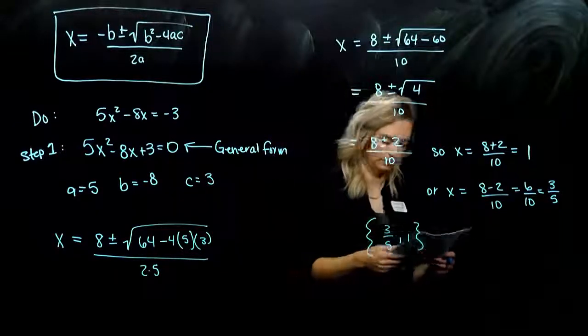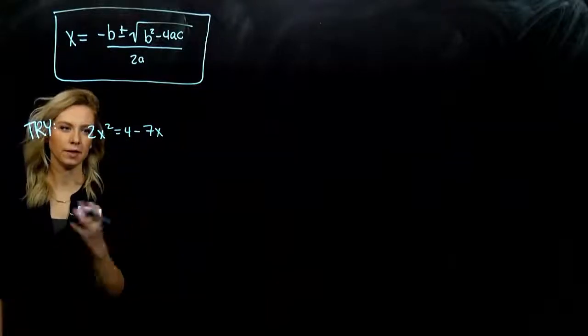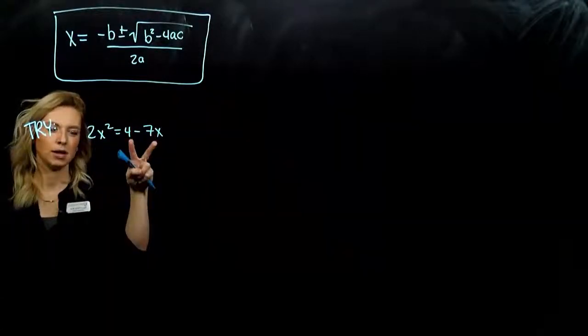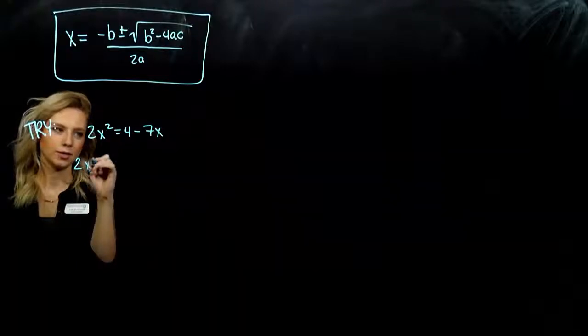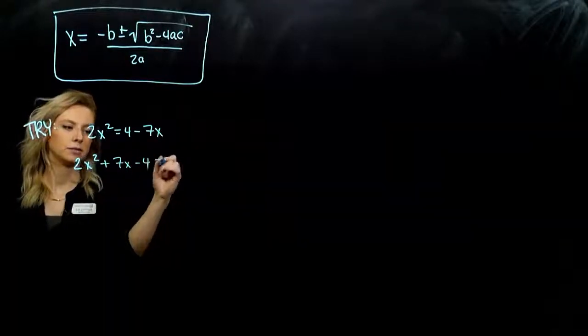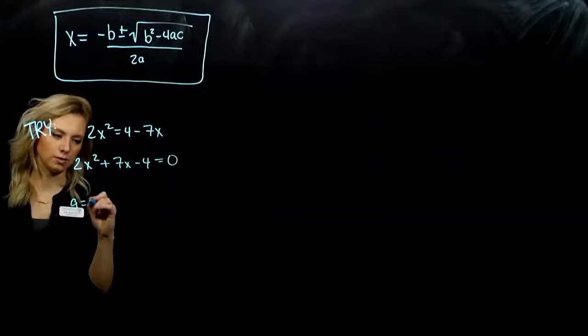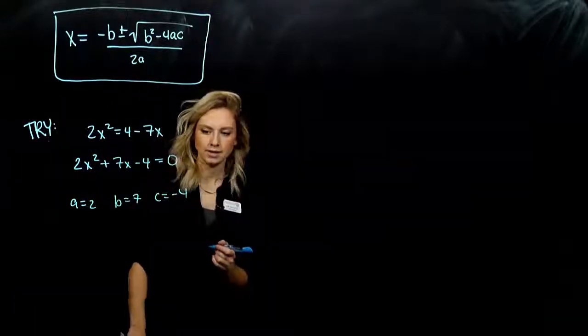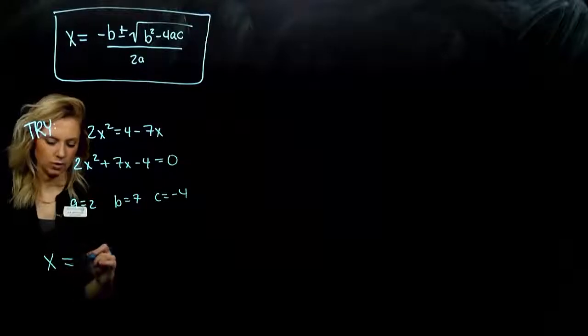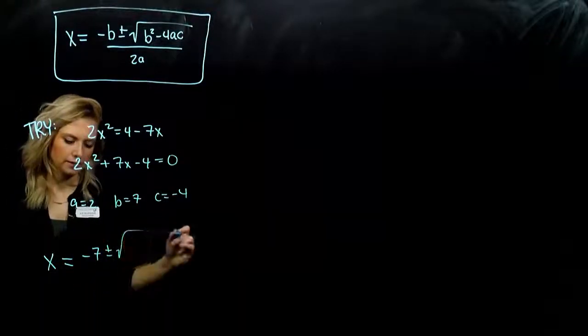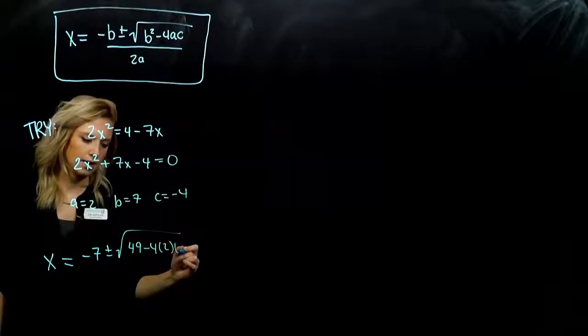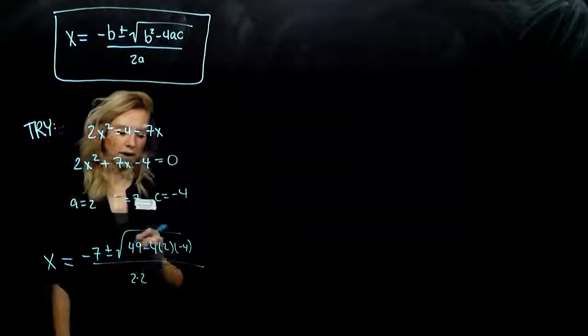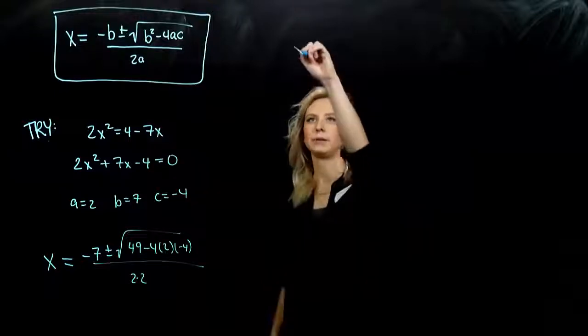Solve using the quadratic formula. Alright, very first thing to do, we need everything on one side set equal to zero. And the ax squared term has to be positive. So we're going to keep him here and move the other two to the left. So I've got 2x squared plus 7x minus 4 is equal to zero. A value is 2. B is 7. C was negative 4. Once we have those, we just need to plug them in and simplify down. So I've got x equals negative b plus or minus b squared minus 4 times a times c all over 2a. We have to be careful with those signs. They are very important. So let's start simplifying.